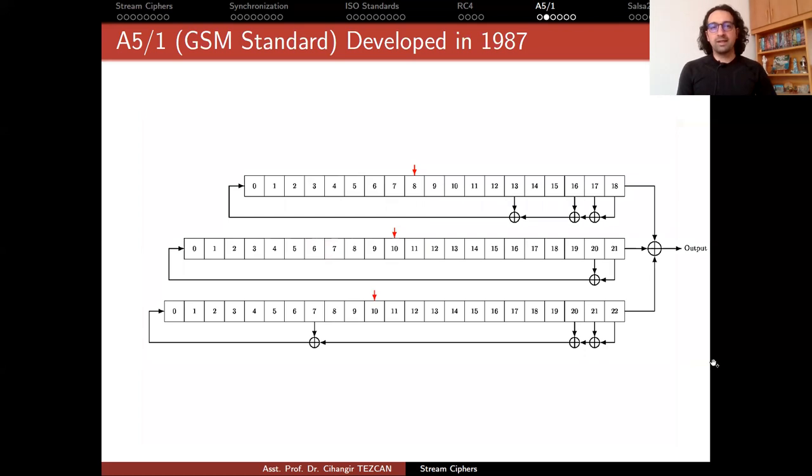Let's look at the design of A5/1. It is actually a combination of three LFSRs. These LFSRs have sizes of 19, 22 and 23 bits. In total, if you sum those numbers, you will see that they sum up to 64, which is also equal to the number of bits of the secret key. As you can see, the tap points are here. LFSRs are clocked in this way and the output is produced here. And finally, the XOR of these three values produces the output.